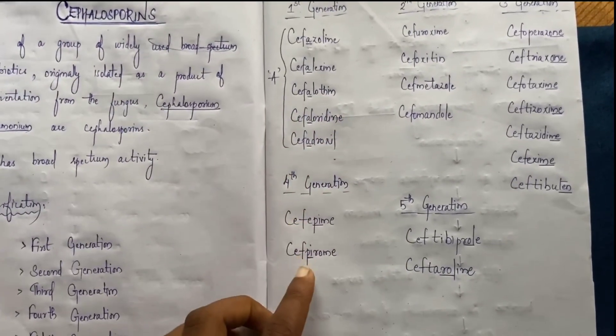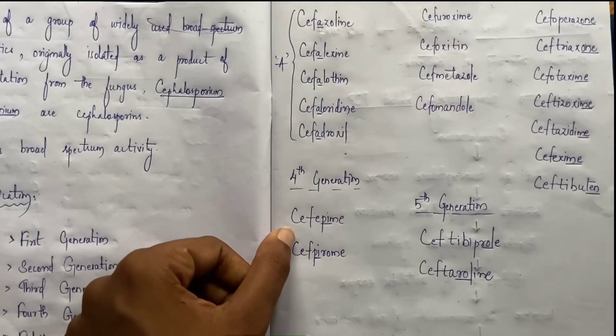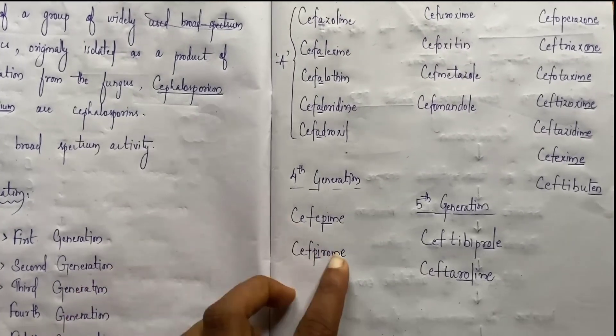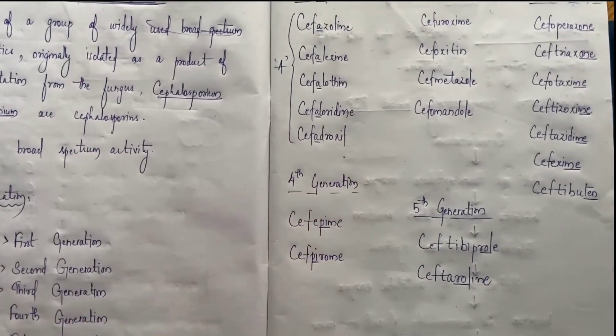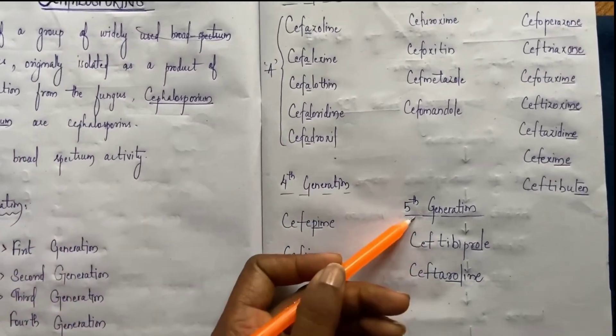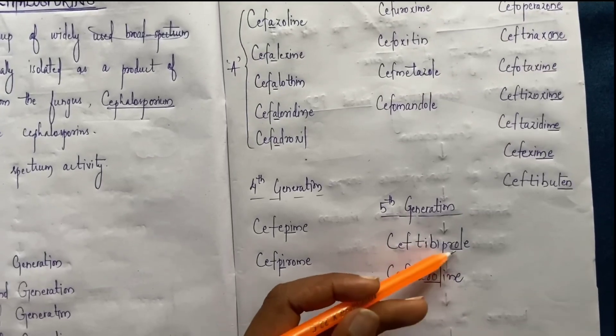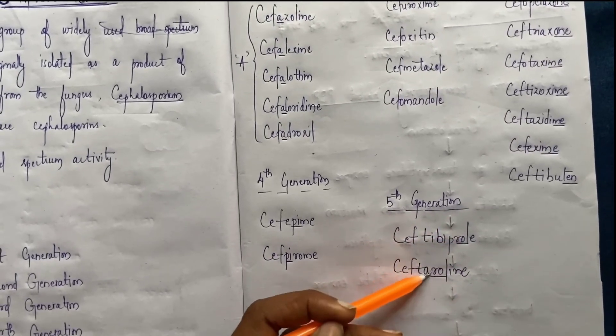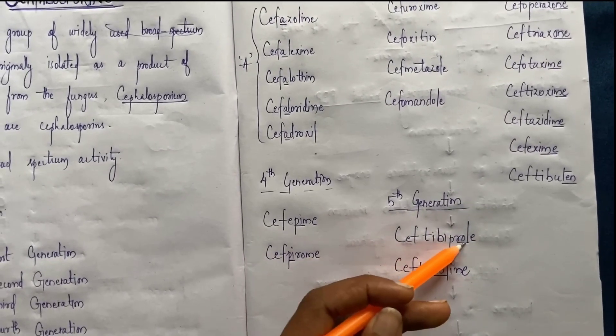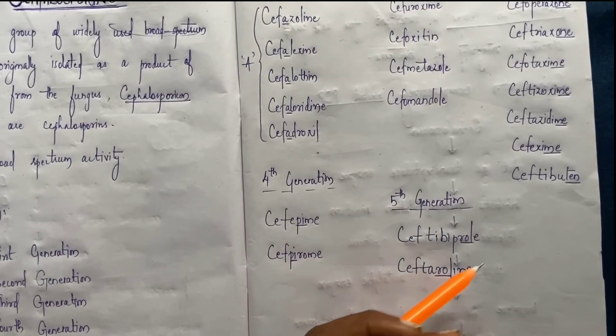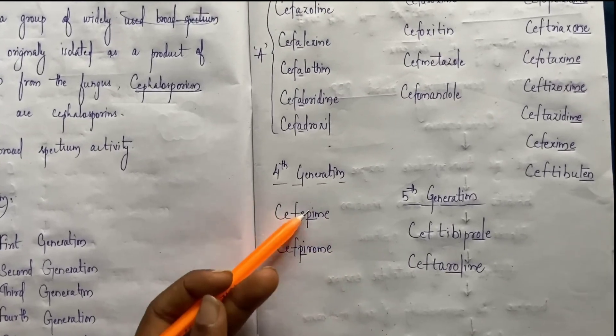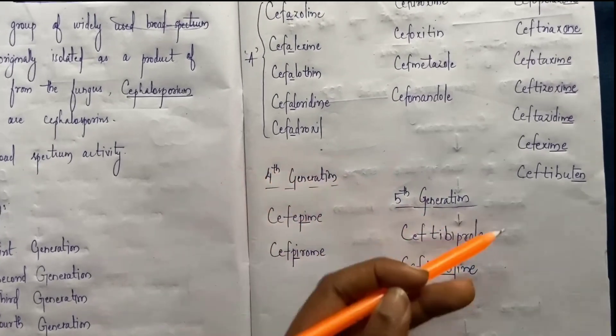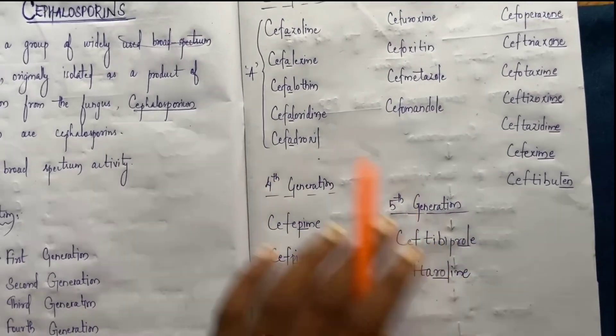Next, let's look at fourth generation. Fourth generation has Ceph followed by pi. If pi comes, that is fourth generation Cephalosporin. Fifth generation has roll in it, like Ceftibiprol and Ceftarolin. So pi indicates fourth generation, and roll indicates fifth generation.